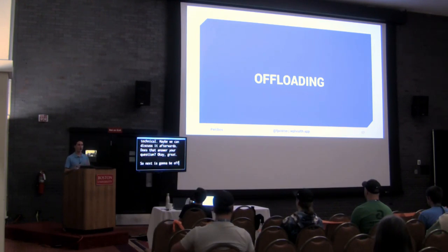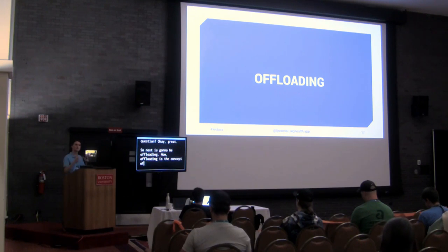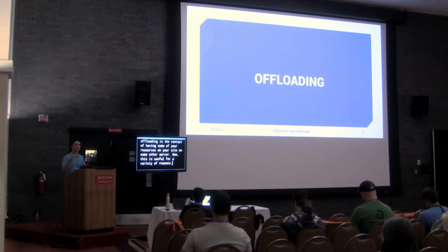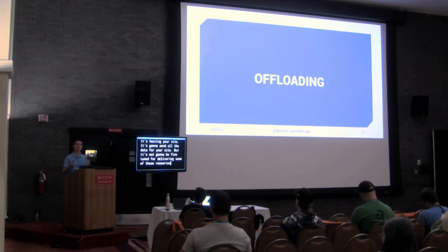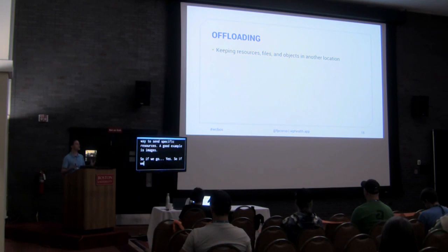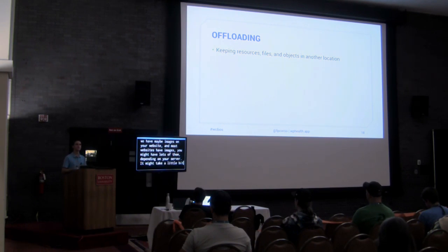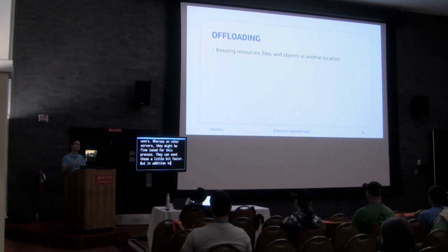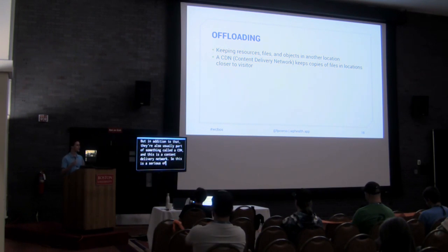Next is offloading. Offloading is the concept of having some of your resources hosted on some other server. By default, your server is hosting your site and sending all the data, but it's not fine-tuned for delivering specific resources. Other servers are configured in better ways to send specific resources. A good example is images — depending on your server, it might take a little bit to send images to users, whereas other servers are fine-tuned for this. They're usually part of something called a CDN — a content delivery network.